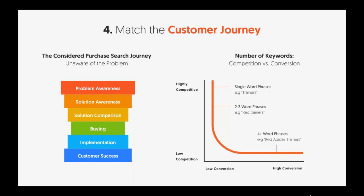Keywords that are three or four word phrases tend to be easier to rank for and have the highest conversion rate. They don't drive enough volume individually, but when you go after hundreds of them it all adds up. You also have to understand the journey people go through when searching: problem awareness, then solution awareness, then solution comparison, then they buy, then they implement, and then they have success.